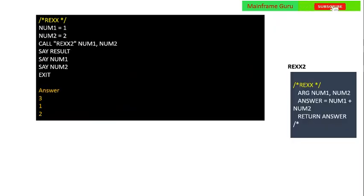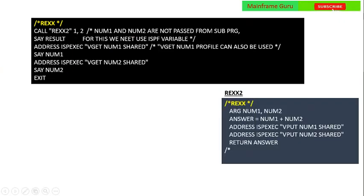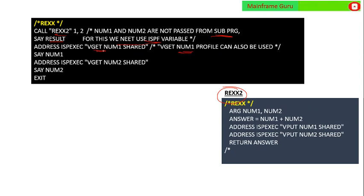If you write num1 = 1, num2 = 2, and CALL REXX2 num1 num2, it will call a separate REXX program that adds the values and returns the answer, displaying 3 and 1 and 2. However, num1 and num2 are not passed from the subprogram by default. To use ISPF variables and pass values into your subprogram, you can use ADDRESS ISPEXEC, and to put values from a subroutine to the main program, you can use the appropriate ISPF services.